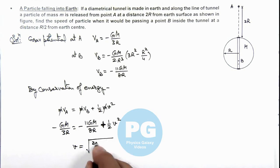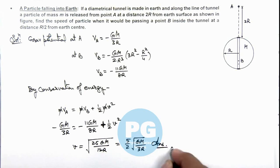Which can be given as 5/2 root of GM by 3R. So this will be the final result of this problem.